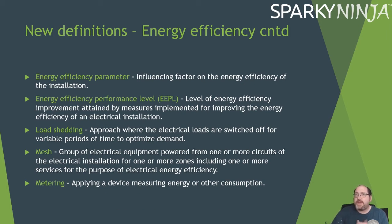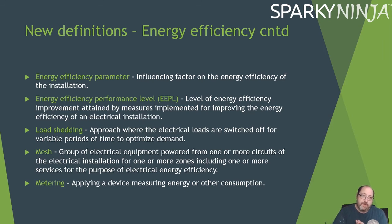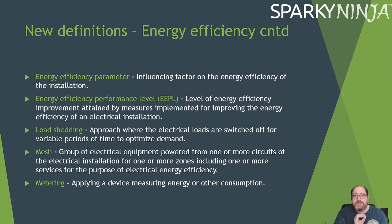The efficiency parameter is an influencing factor on the energy efficiency of the installation. Load shedding is the approach where electrical loads are switched off for variable periods of time to optimise demand. A mesh is a group of electrical equipment powered from one or more circuits for one or more zones, including one or more services for the purpose of energy efficiency. Metering is applying a device that measures energy or other forms of consumption.